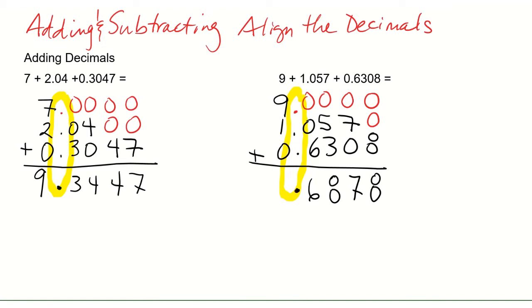I'm going to bring down my decimal. 9 plus 1 is 10, so my final answer is 10.6878. It's very important when you're doing these problems, especially ones that have a lot of numbers, make sure that your rows and columns are clearly defined and that things are lined up correctly. A common mistake is to add up the numbers in the wrong rows or wrong columns — this is just an alignment error from how you wrote them down when rewriting the problem.